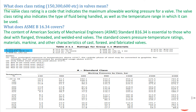Our first question is: what does class rating 150, 300, 600, etc. mean in valves? When you are buying a valve or preparing a technical specification for valves, there is a rating that we mention. Basically this rating is the maximum allowable pressure that a valve can withstand — it is the maximum allowable working pressure of your system.